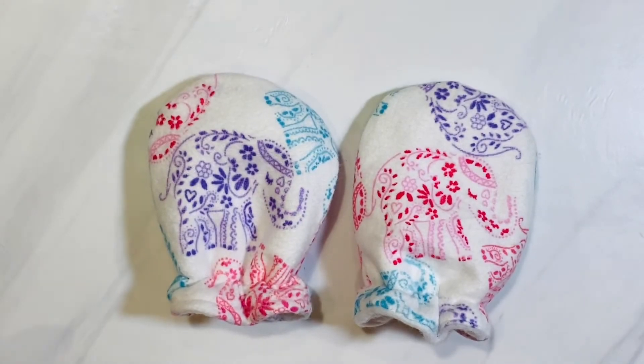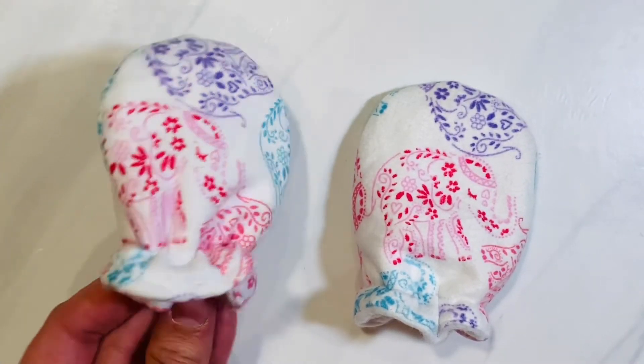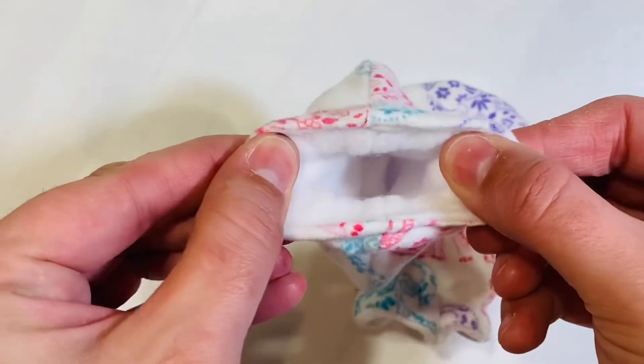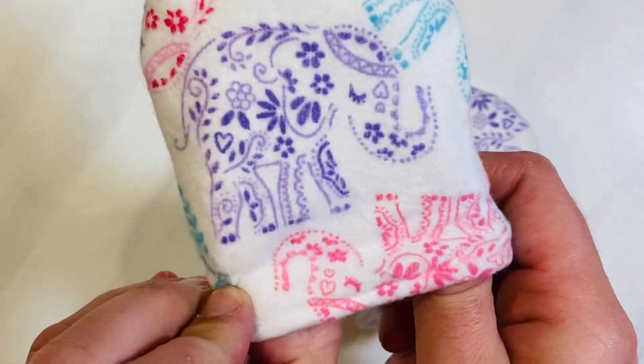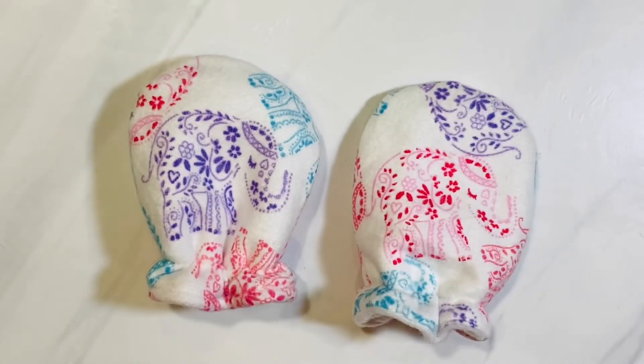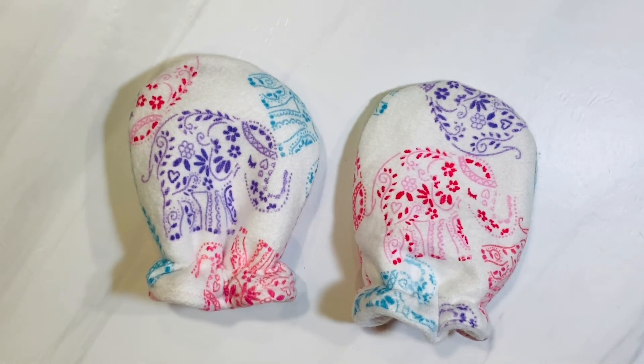Now you're going to repeat this process for your second mitten and you are all done. They are super cute. They actually stay on and they're great for no-scratch mittens, but they're also good for colder weather when you line them with fleece like I did. Make sure to like and subscribe to my channel to see all of my new easy step-by-step sewing tutorials.